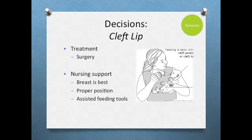Cleft lips are generally identified early in the pregnancy and decisions regarding the surgery would have been discussed with the physician. As a nurse, I would want to know when the surgery is scheduled and ensure the family knows what the surgery entails. In the meantime, I would provide lots of nursing support to the mother in terms of how to help breastfeed her baby with a cleft lip. A baby with a cleft lip is unable to form proper suction, therefore they may not get enough breast milk to meet their nutritional requirements. Nursing support would include discussing the three E's of breastfeeding with the mother.